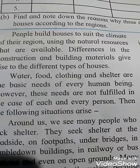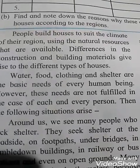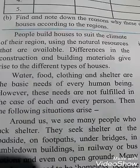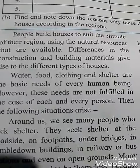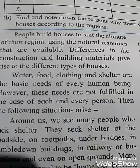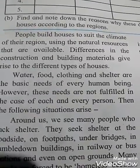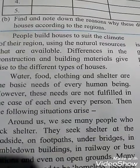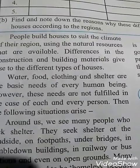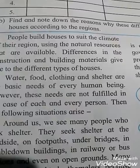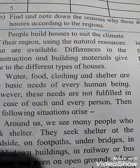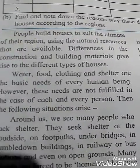In medium rainfall regions, slanted roof houses are also built, rectangular in shape. In mountainous regions, multi-storey houses are built, also rectangular. Depending on the region, different types of houses are built.